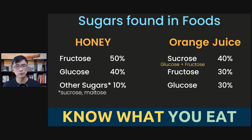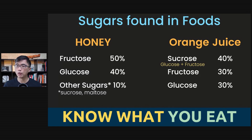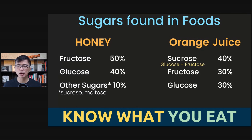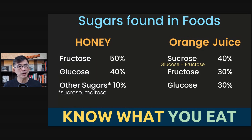The composition of sugars typically found in orange juice is about 40% sucrose, 30% fructose, and 30% glucose. These compositions may vary depending on the source and type of honey and orange juice, but this is just to illustrate that there are different types of sugars in our foods.